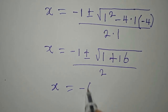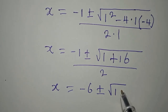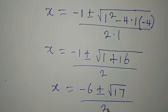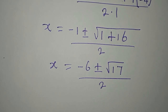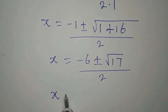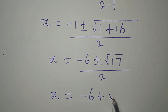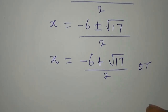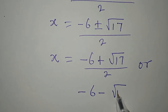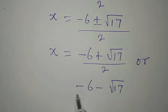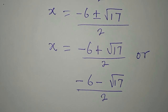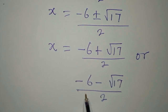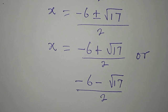Our x is equal to minus 1 plus or minus square root of 16 plus 1, which is 17. Then we divide this by 2. So from the first equation, we have our x to be equal to minus 1 plus square root of 17 over 2. We are not interested in getting the decimal solution, so we can stop at this level.